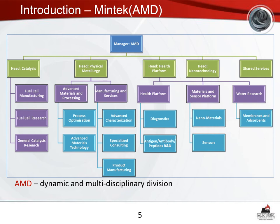The use of the HPC platform started with the catalysis group, which was mainly using it for the HIASA project dealing with the development of fuel cells. It later expanded into the physical metallurgy and health platform groups. Physical metallurgy mostly uses it for calculations to enhance production of memory-shaped alloys, and the health platform uses it for the diagnostic group, which focuses on fabrication of diagnostics for infectious diseases such as malaria, HIV and AIDS, and COVID-19.